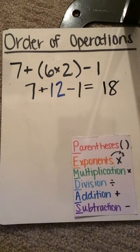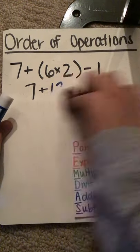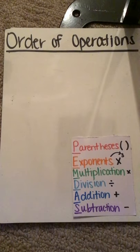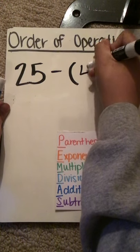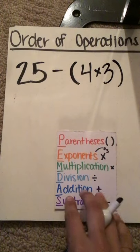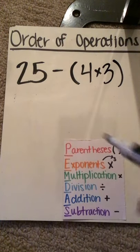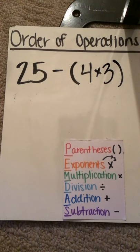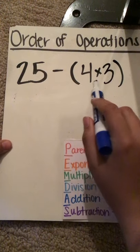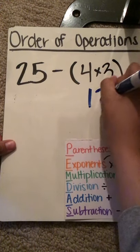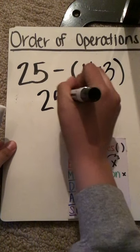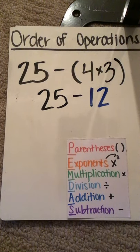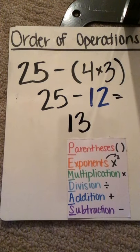So let's try a different problem. Let's do 25 minus, in parentheses, four times three. So I'm not starting with 25 minus four. I have parentheses here. So right away, I know I need to solve what's inside of the parentheses. So I'm going to do four times three, which is 12 again. So now I have 25 minus 12. 25 minus 12 equals 13. So my answer is 13.